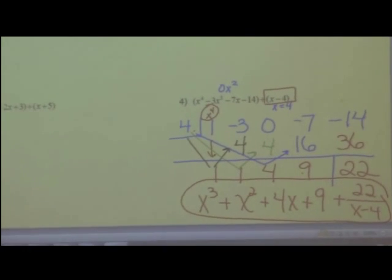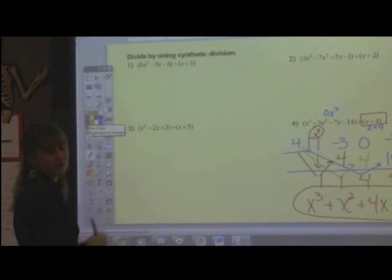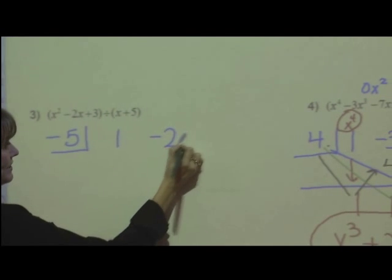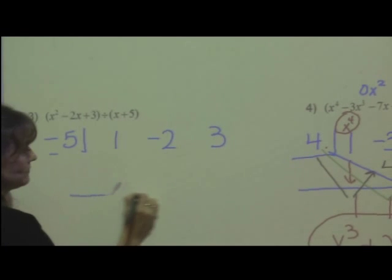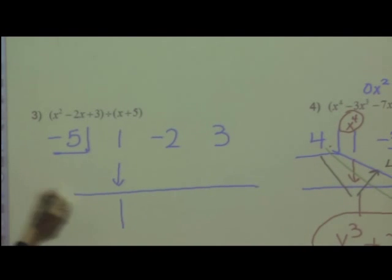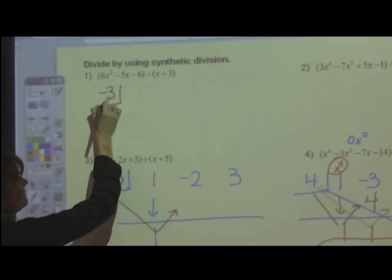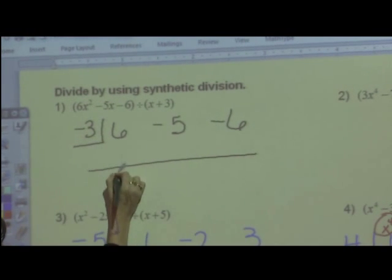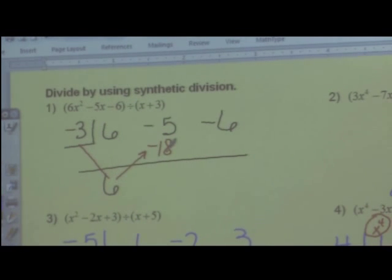So the other three problems I am going to let you try on your own. We'll do the key setup. I'll get it going for you, and then I will have you pause the video, try these on your own, and I'll give you the final answer. On this one, negative 5, 1, negative 2, 3. How about I give you some room? The one is going to drop down, and you take it from there. The one above, negative 3. I'm going to use 6, negative 5, and negative 6. The 6 will drop down, and you will start working that one out the rest of the way.